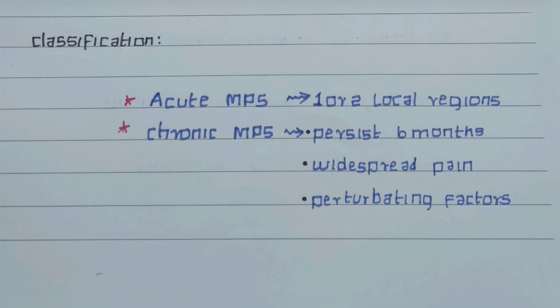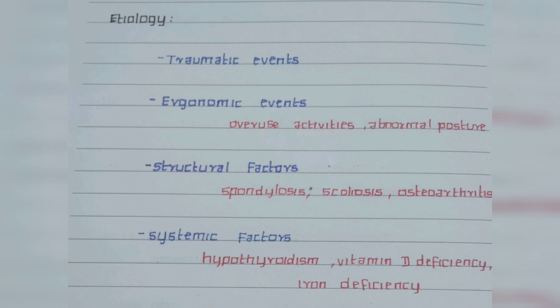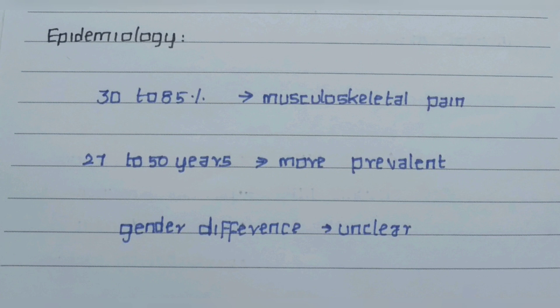There are more perpetuating factors for chronic MPS, such as trauma, stress, severe exercise, or underlying disease conditions. The etiology for MPS includes traumatic events and ergonomic events like overuse activities of the muscle and abnormal postures. Structural factors include diseases like spondylosis, scoliosis, and osteoarthritis, which involve the bones. Systemic factors include hypothyroidism, vitamin D deficiency, and iron deficiency.